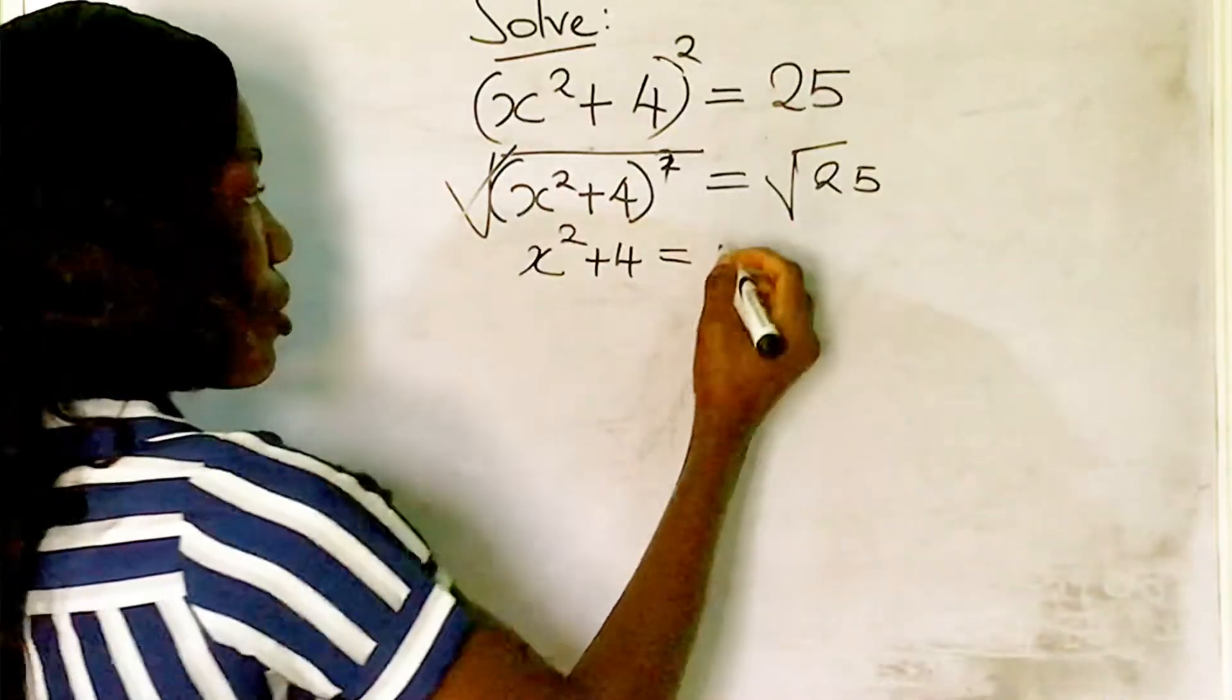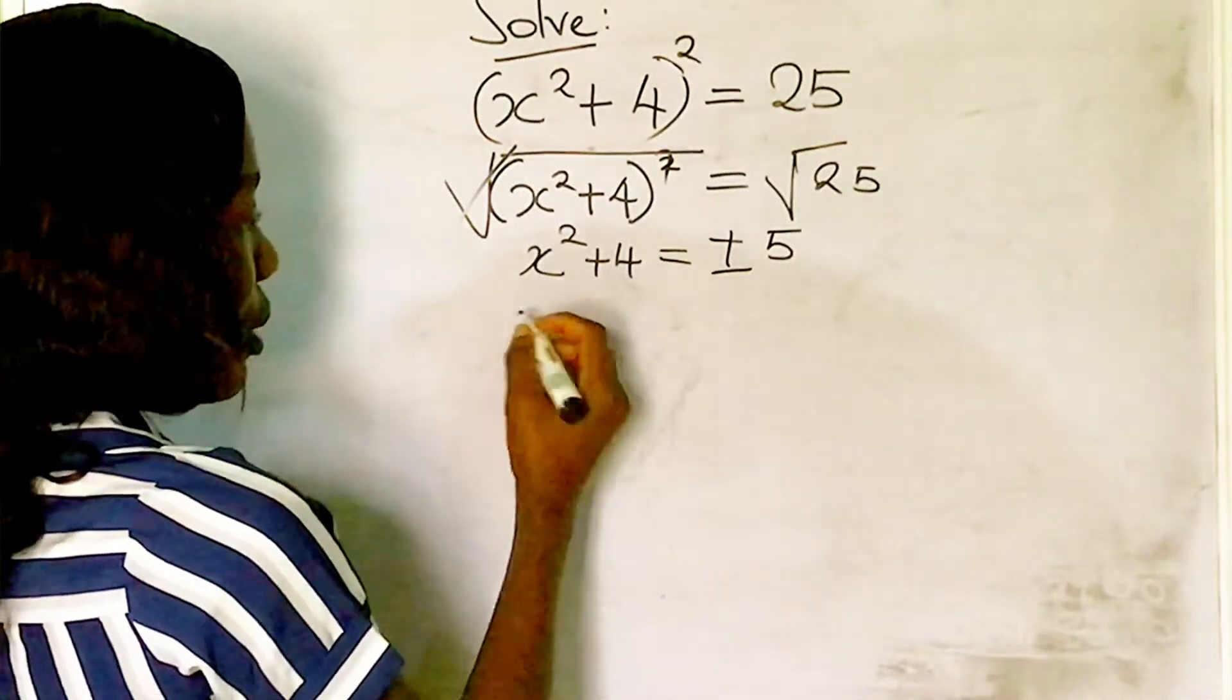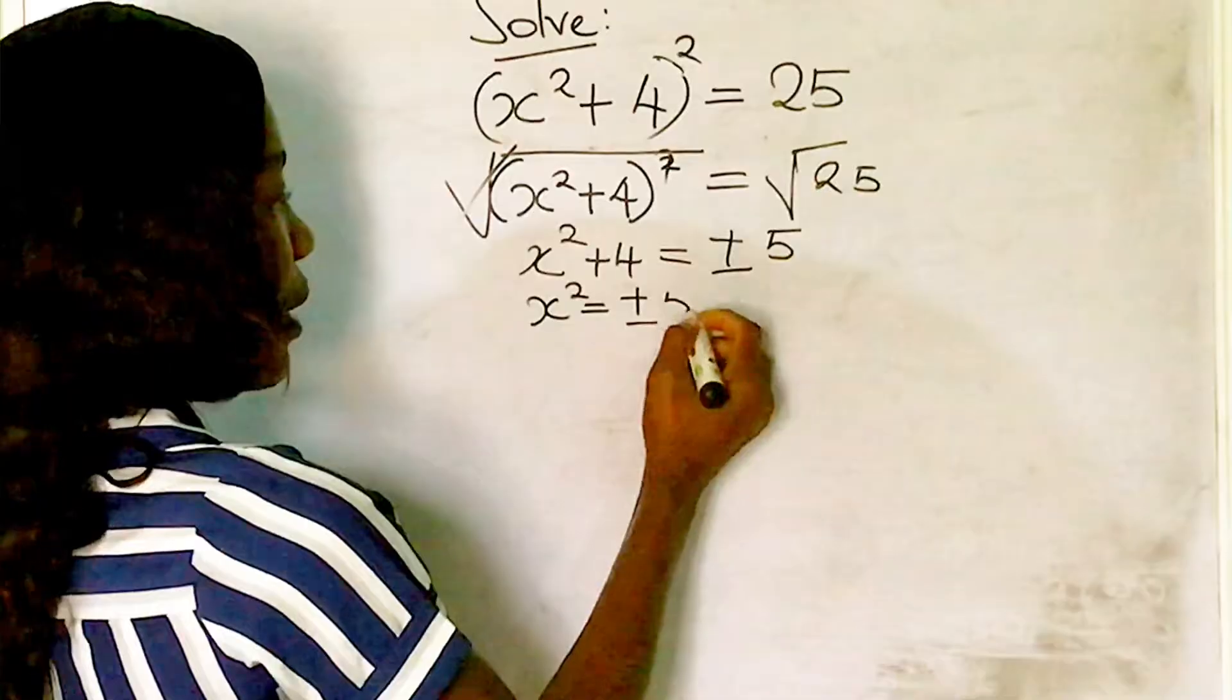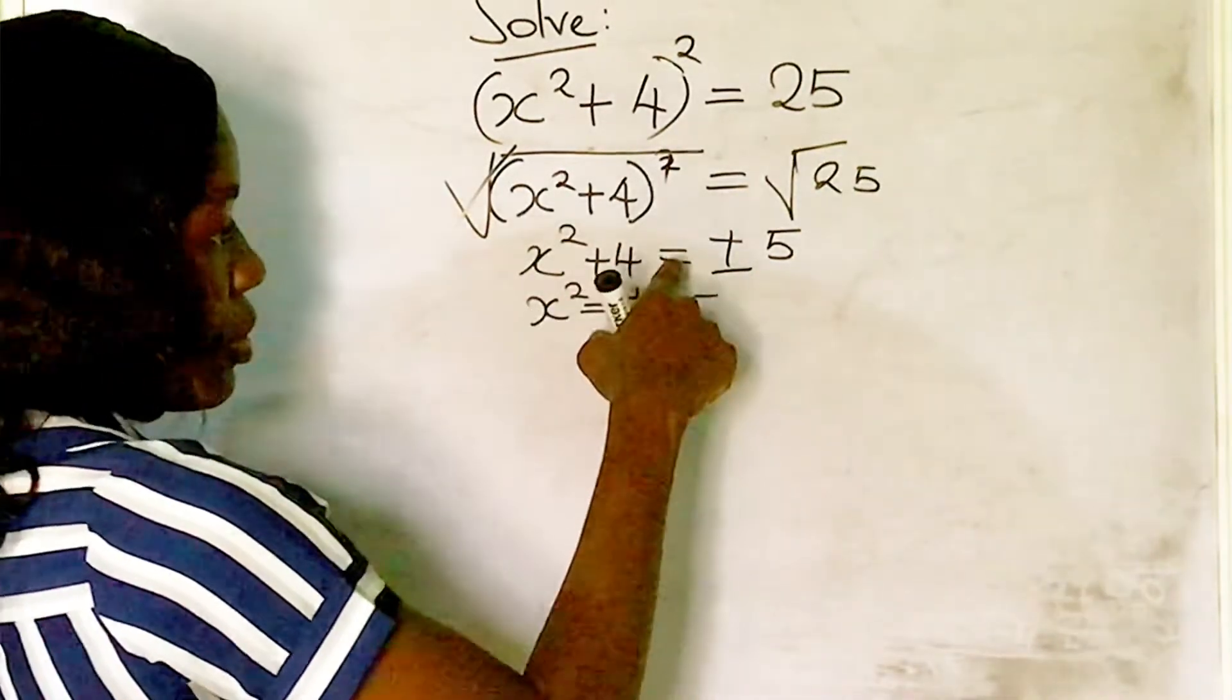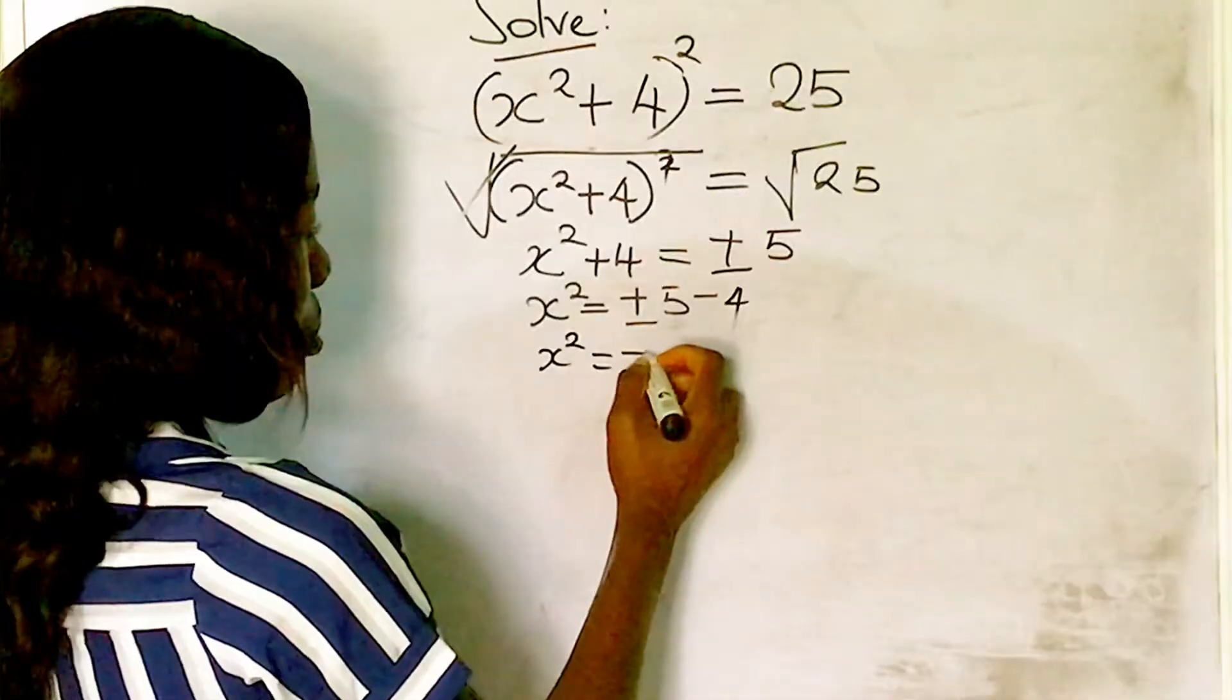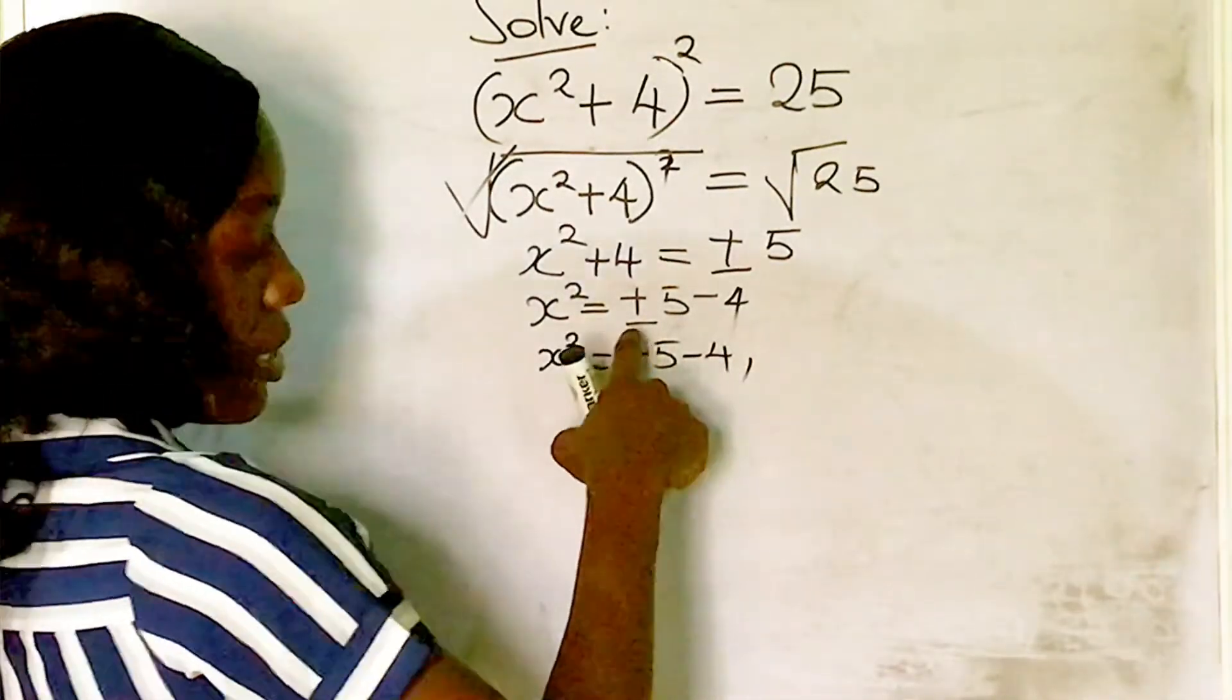Now let's collect like terms. We have x² = ±5 - 4. When the positive 4 crosses the equation, it becomes negative 4. So we have x² = 5 - 4, or remember we have plus or minus 5...